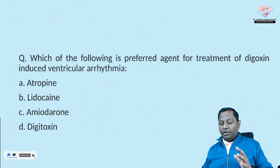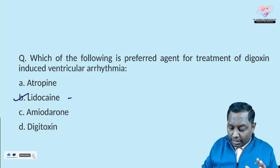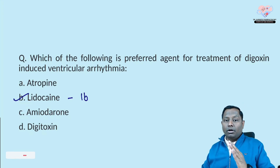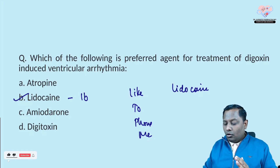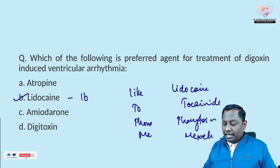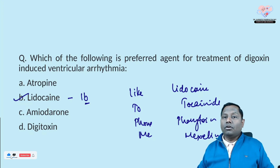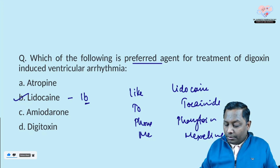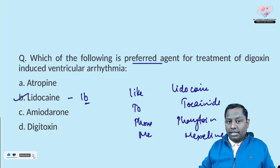The next question: which of the following is the preferred agent for the treatment of digoxin-induced ventricular arrhythmia? The preferred agent is lidocaine — a Class 1B anti-arrhythmic drug. A helpful mnemonic for Class 1B drugs: 'I am so brave that they all like to phone me' — where the drugs are Lidocaine, Tocainide, Phenytoin, and Mexiletine. Atropine can also be utilized, but the preferred one is lidocaine. Amiodarone can also be used, but the first-line drug is always lidocaine.